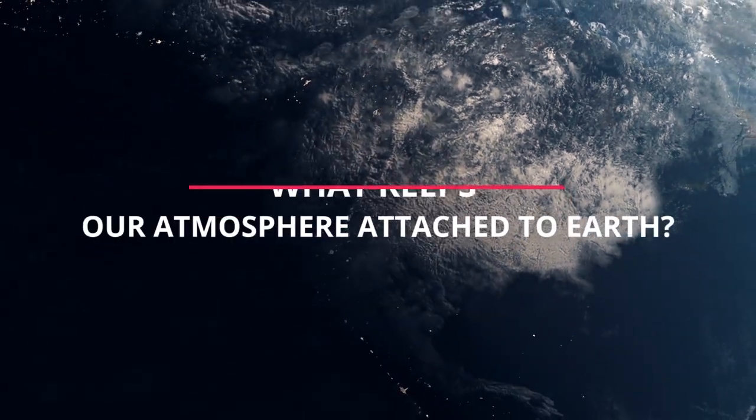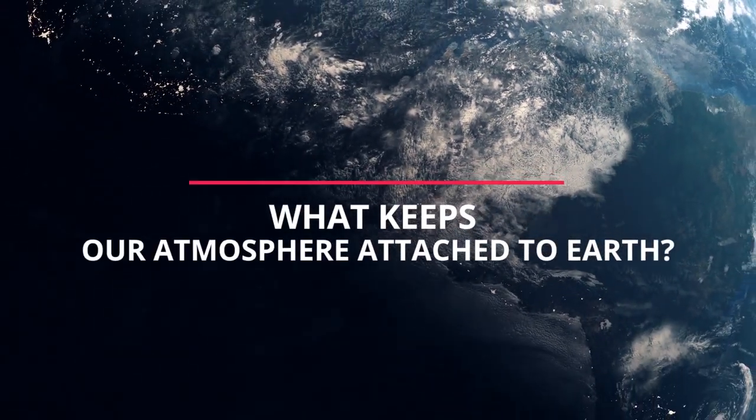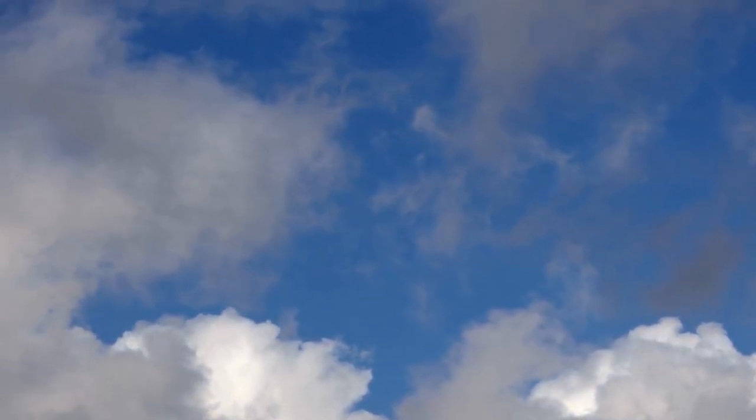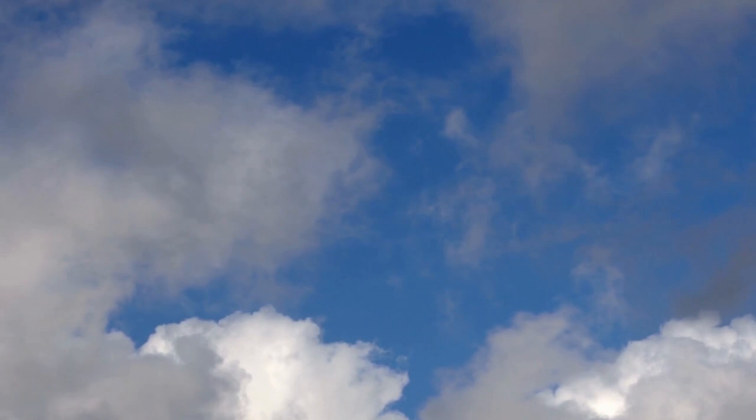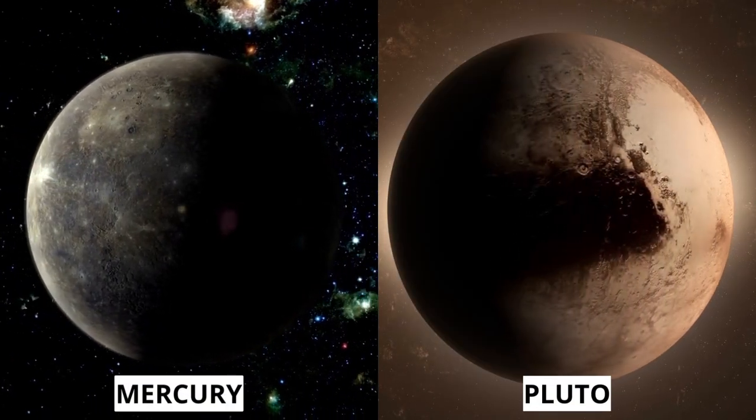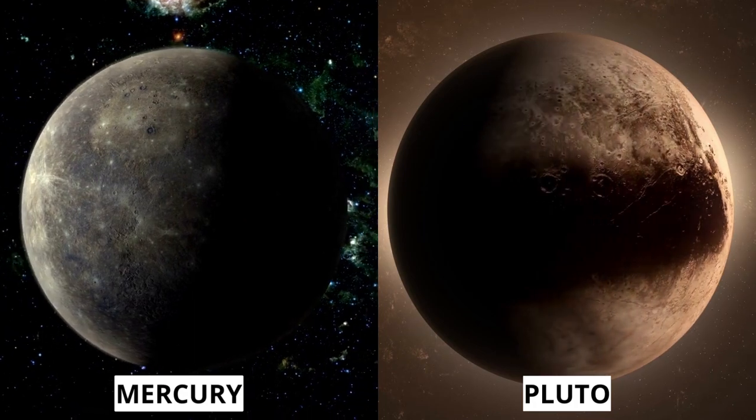What keeps our atmosphere attached to Earth? Our atmosphere is kept in place by the pull of Earth's gravity. If Earth was a much smaller planet like Mercury or Pluto, its gravity would be too weak to hold a large atmosphere.